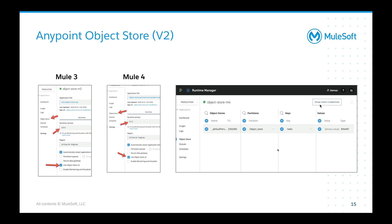Additionally, if you click 'show client credentials', another benefit of object store V2 is that it provides a REST API. So you have the ability to store key-value pairs from one application, and then from another app you can leverage that REST API to call and extract data from the other app's object store. That's another great benefit of object store V2.